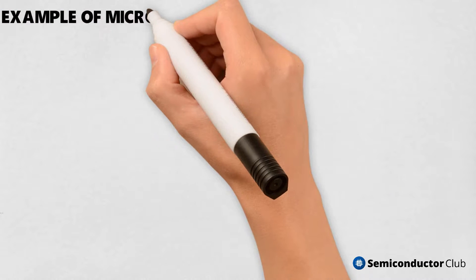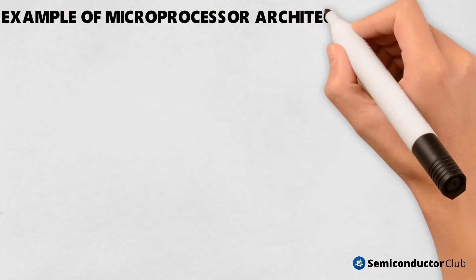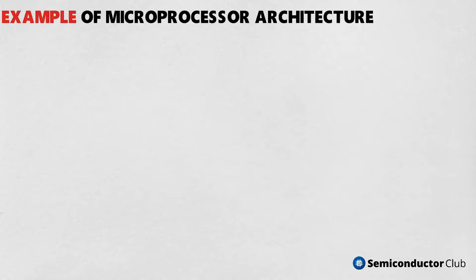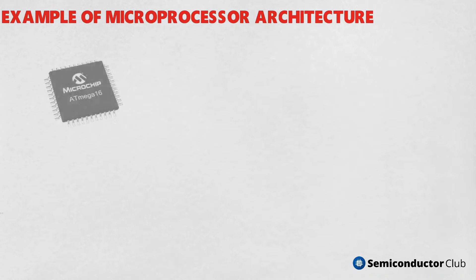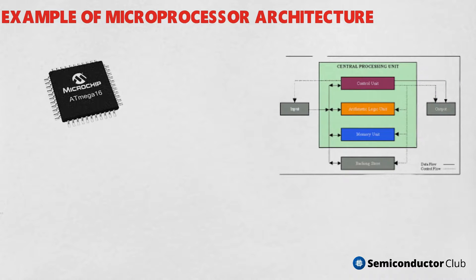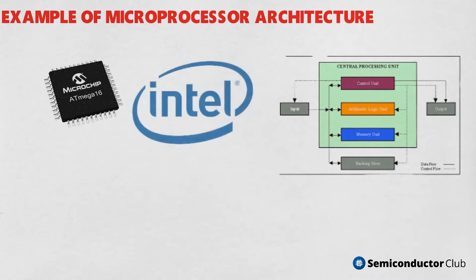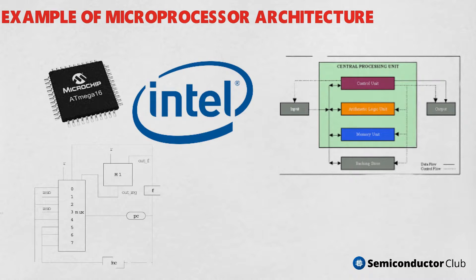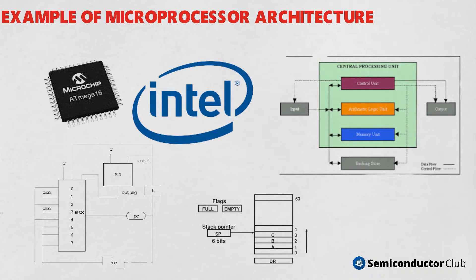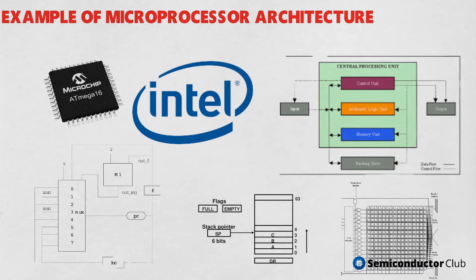Now, the 8085 architecture: the 8085 is an 8-bit microprocessor, and it was launched by the Intel team in the year 1976 with the help of NMOS technology. The configurations of the 8085 microprocessor mainly include: data bus 8-bit, address bus 16-bit, program counter 16-bit, stack pointer 16-bit, registers 8-bit, plus 5V voltage supply, and operates at 3.2 MHz single-segment CLK.